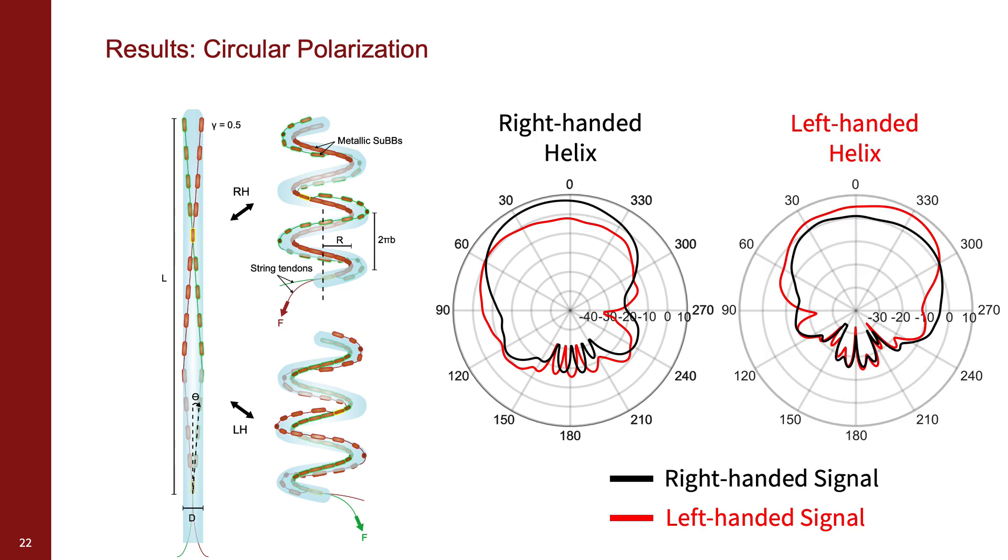The left-handed helix configuration shows the opposite response, amplifying left-handed polarized signals. We see a 6 to 10 decibel decrease between the same-handed and opposite-handed signals, or equivalently a 75 to 90% reduction in signal strength, indicating that we are achieving polarity switching with the demonstrated reconfiguration.